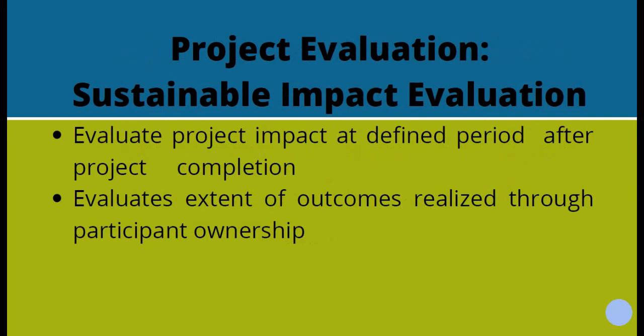The sustainable impact evaluation happens after a time period following the end of the project — perhaps a year after the end of the project. This is to determine whether the sustainability that we expected was real. This process takes place sometime after the end of project transition, perhaps six months to a year after. The purpose is to determine whether the outcomes expected after the transition have been realized, and the extent to which the project has continued under the ownership of the community.